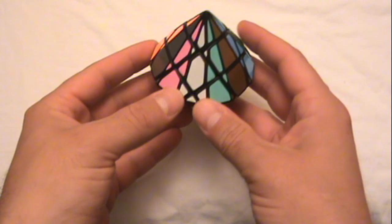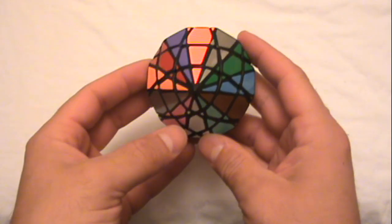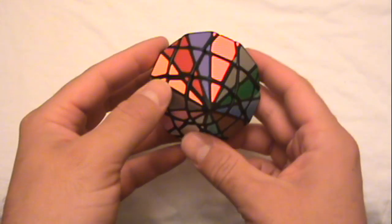The reason for the dodecagonal dipyramid name is because it is a 24-sided puzzle.